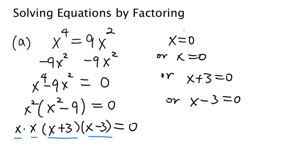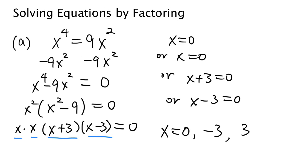So x equals 0 is one of the solutions. The first two equations give you the same solution. The third equation — if x plus 3 equals 0, you can subtract 3 from both sides and get negative 3 as a solution. And from the last equation, if you add 3 to both sides we get 3 as a solution. So we have three solutions of this equation.